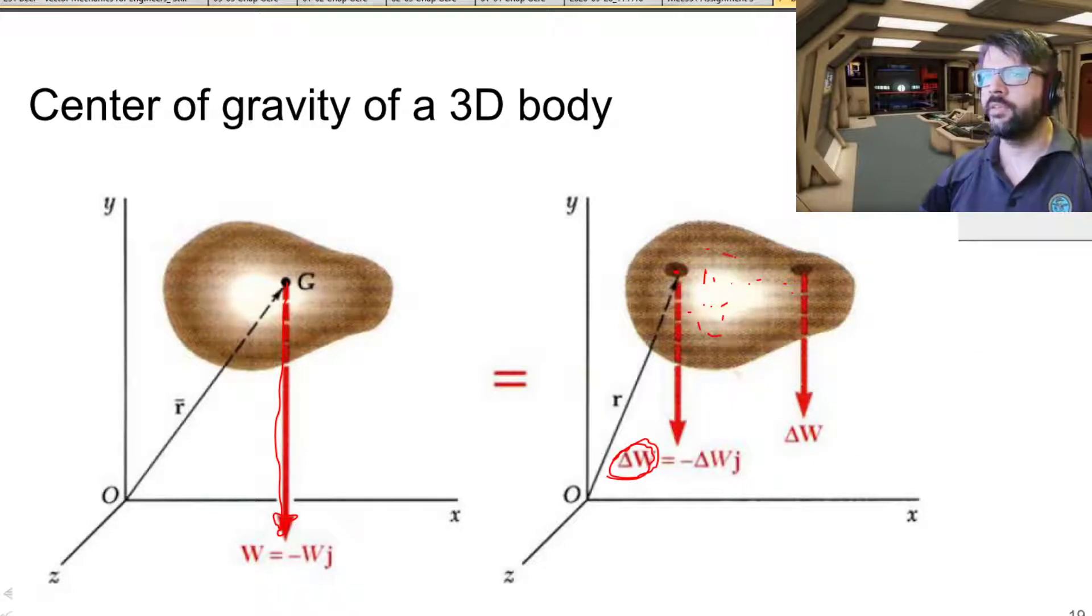So as long as you end up with the same moment, then it all evens out. And if you end up doing your analysis and choosing as the origin a point along the line of action of the weight, then the total moments should be zero.